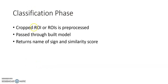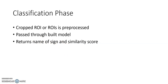Here is the classification phase. The ROI cropped from the detection phase will be pre-processed by applying filters to reduce noise and also to increase brightness or enhance contrast. After pre-processing, it will be passed through the built model, which will return the name of the sign and also the similarity score. The similarity score simply means the probability of the recognition.